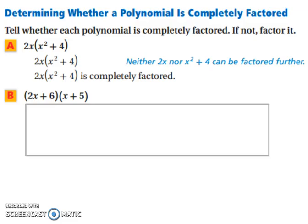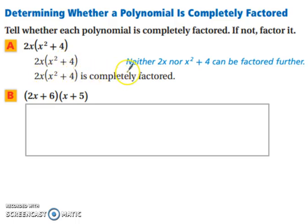Let's start by determining whether a polynomial is completely factored. For example a, we have 2x times the quantity x squared plus 4. You can't do anything with the 2x, and you can't do anything with the x squared plus 4. If it was a minus, we would have a difference of two squares, but since it's a plus, it's completely factored. There's no greatest common factor to take out.